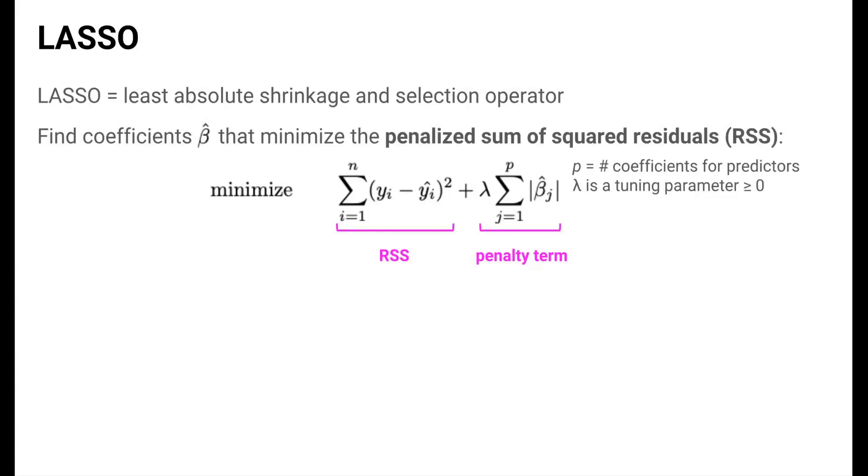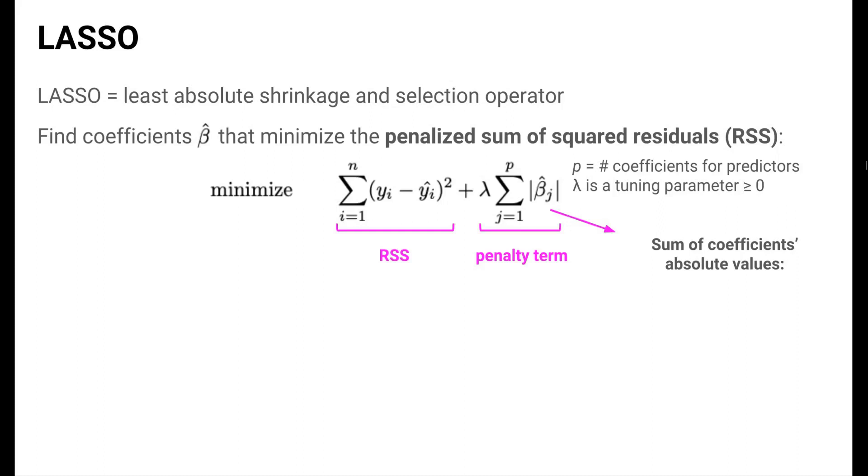LASSO stands for least absolute shrinkage and selection operator, and the criterion that it uses to find good beta coefficients is to minimize a penalized version of the sum of squared residuals. The first part of this quantity is the familiar RSS, and the second term is an added penalty term. What exactly is being penalized though? If we look more closely at the penalty term, we see that it involves the sum of the absolute values of the estimated coefficients.